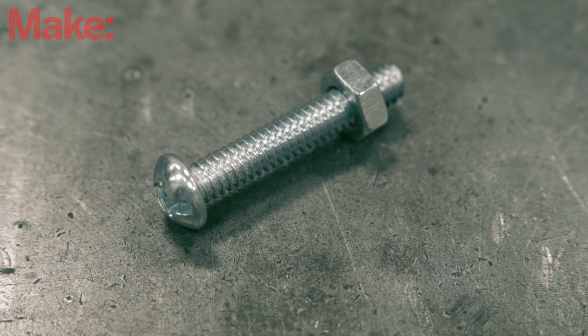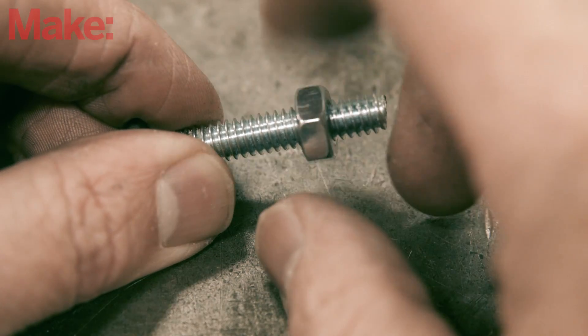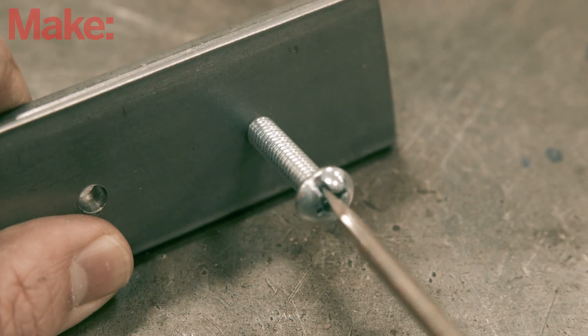Screws and bolts are simple options for fastening two pieces of material together. As you might have guessed, the secret is in the threads, but how would you go about making your own?